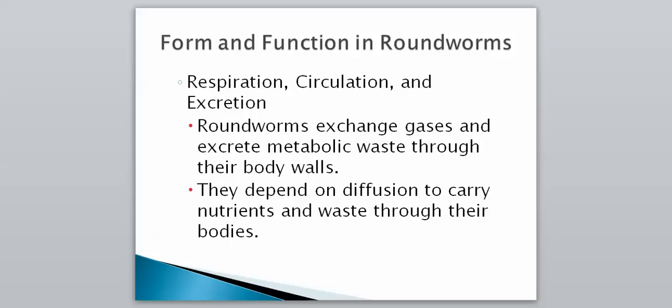For respiration, circulation, and excretion: roundworms exchange gases and excrete metabolic waste through their body walls, with their cells being very close to the external environment. They depend on diffusion to carry nutrients and waste through their bodies — substances simply travel from areas of high concentration to areas of low concentration. So there are no major circulatory systems carrying that out.